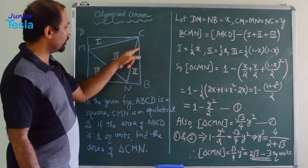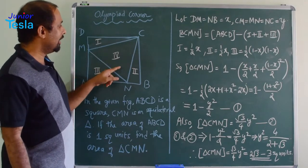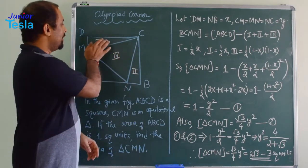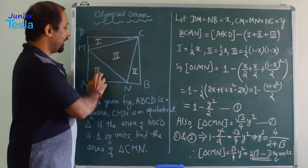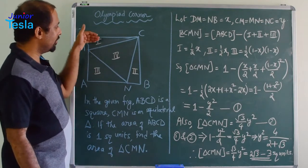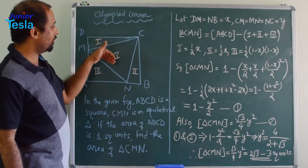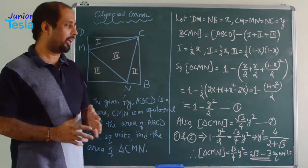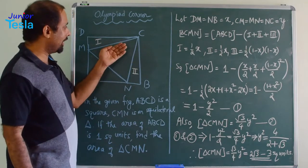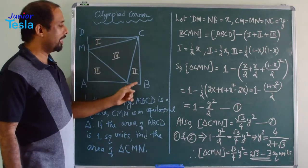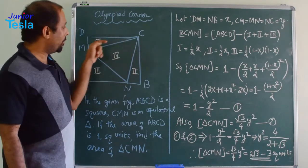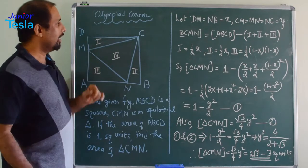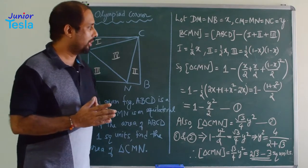The total area of the equilateral triangle equals the total area of the square minus those three corner portions. If you remove all those parts, only the equilateral triangle remains. Therefore, the area of this triangle equals 1 minus the sum of those three portions.